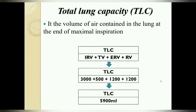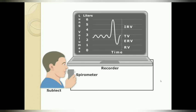Next is the total lung capacity — how much total capacity our lungs have. It is the volume of air contained in the lung at the end of maximal inspiration. After breathing in as much as possible, the total air inside the lungs is total lung capacity. It is the addition of all four volumes: inspiratory reserve volume, tidal volume, expiratory reserve volume, and residual volume — making up 5900 ml.